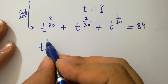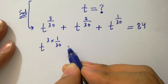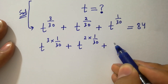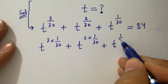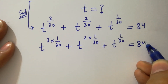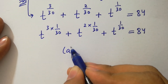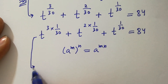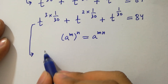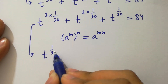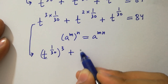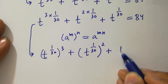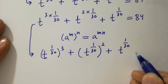This gives us t to the power 3 times 1 over 30 plus t to the power 2 times 1 over 30 plus t to the power 1 over 30 equal to 84. Using the rule that a to the power m, to the whole power n, equals a to the power mn, we rewrite each term as a power of t to the 1 over 30.